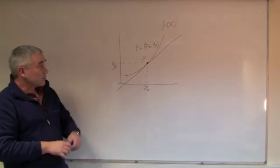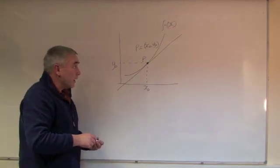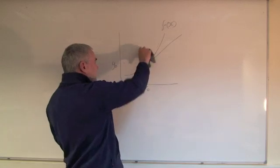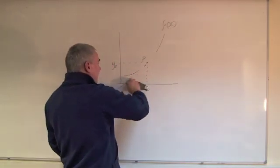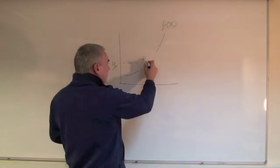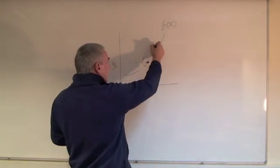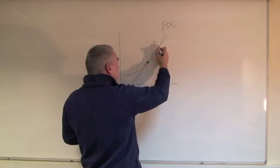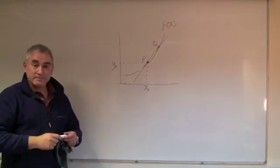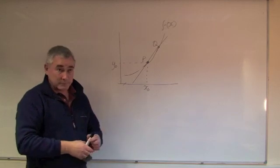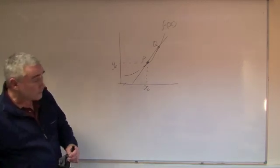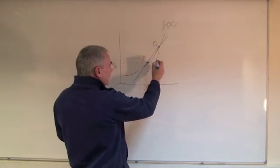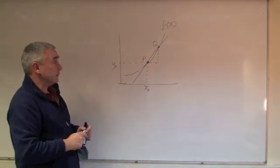Rather than draw a tangent first off, because that is fairly difficult to do, what I could do instead is draw what's called a secant. I can't draw a tangent easily, but I can draw a secant line. There are two points, P and Q, and the secant line is simply the line that joins those two points.